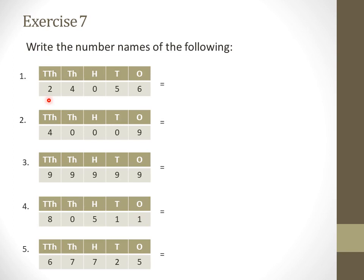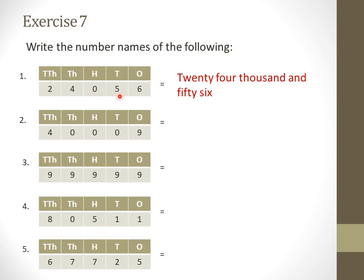Let's start with the first example. In the first example, you can see 24 is written under the thousands period, so we will start with 24,000. Next, under the hundreds section, we don't have anything — just 0 — so skip that. Moving to the next: in tens we have 5, and in ones we have 6, so we will write 56. Therefore, the number name is twenty-four thousand and fifty-six.